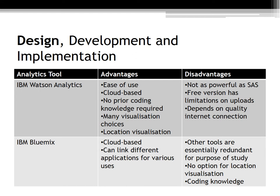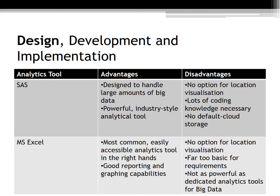The only real disadvantages of IBM Watson Analytics are that it is not as powerful as SAS, and the free version has limitations on uploads — though that can be circumvented through the premium version or by using specific pieces of data at a time. It also depends on internet connection quality rather than running locally. SAS is an industry standard designed to handle large amounts of big data and is a powerful analytical tool; however, it has no option for location visualisation, requires extensive coding knowledge, and has no default cloud storage — which can be added on but is an expensive investment.